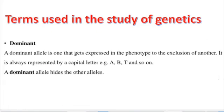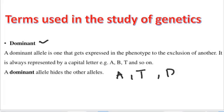A dominant allele is the one that gets expressed in the phenotype. The dominant allele is written in capital letters and it always overshadows the recessive allele. For example, dominant alleles can be written as capital A, capital T, or capital D.